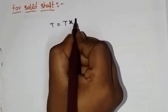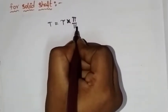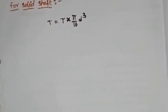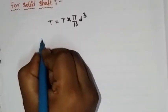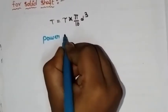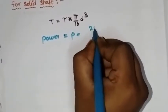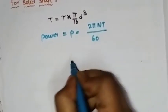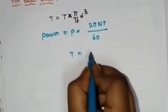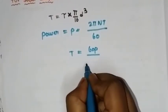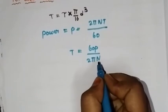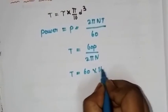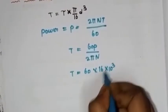T is equal to tau into pi by 60. Using the power formula to find T value: T is equal to 60 P by 2 pi N. T is equal to 60 into P, which is 16 into 10 power 3, divided by 2 pi N.